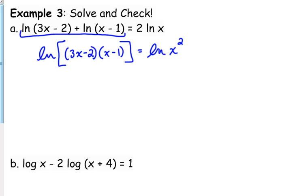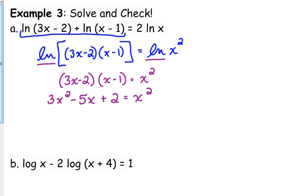And on the right side, the other key to this is we don't want any coefficients. So we need to use our power rule to rewrite that right side as the natural log of x squared. So now that we have a single natural log on this side, a single natural log on that side, the only way it's going to be equal is if what's inside those natural logarithms are equal to each other. So I'm going to drop the natural logs, but only because it's on both sides. And then this just becomes a quadratic equation.